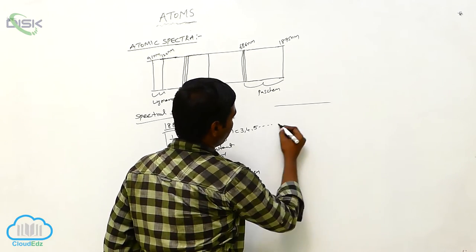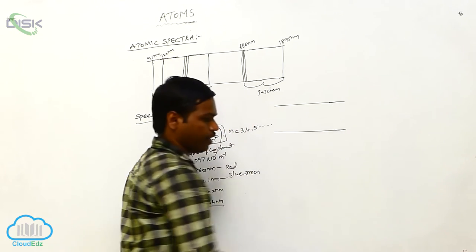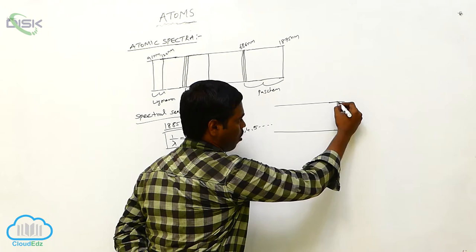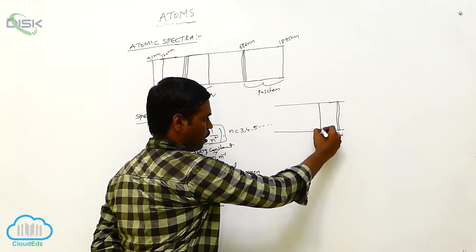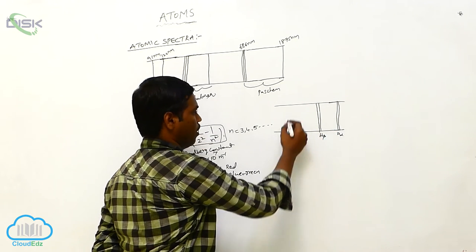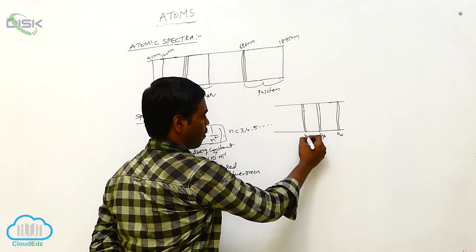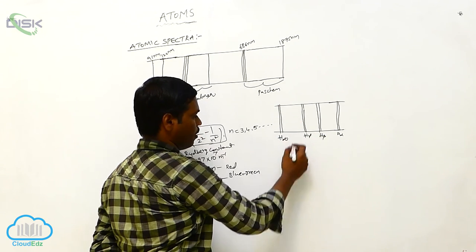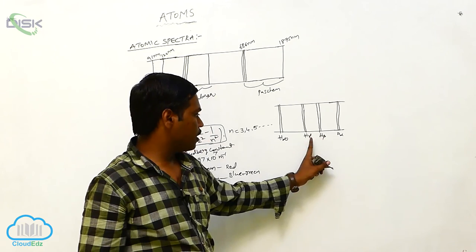These are the different spectral lines of the Balmer series. In the diagram, the H-alpha line, H-beta line, H-gamma line, and H-infinity line can all be seen. These together form the spectral series of hydrogen.